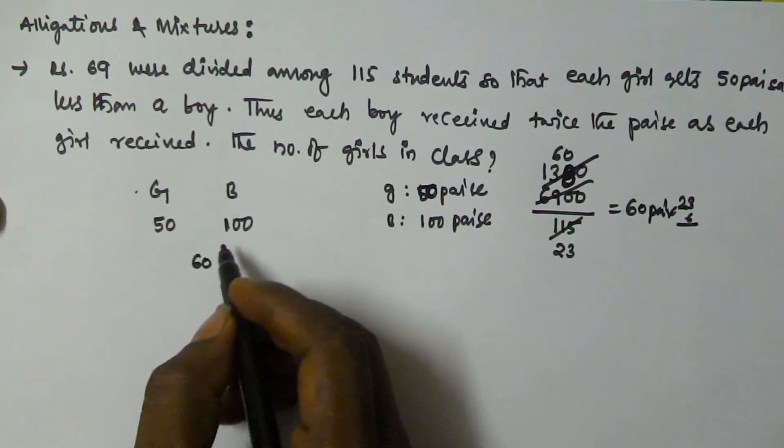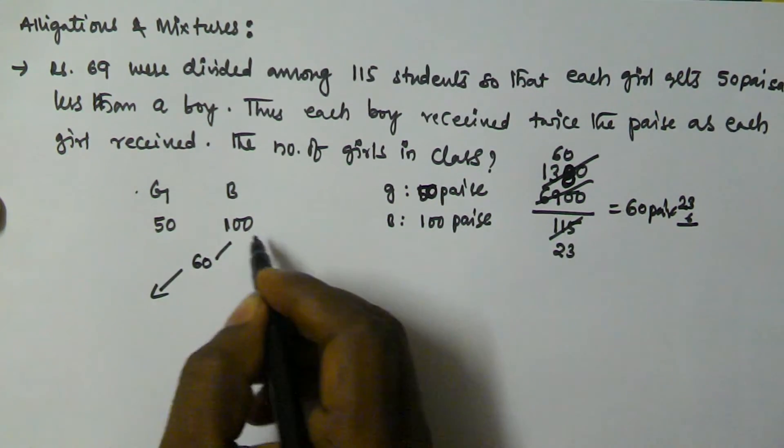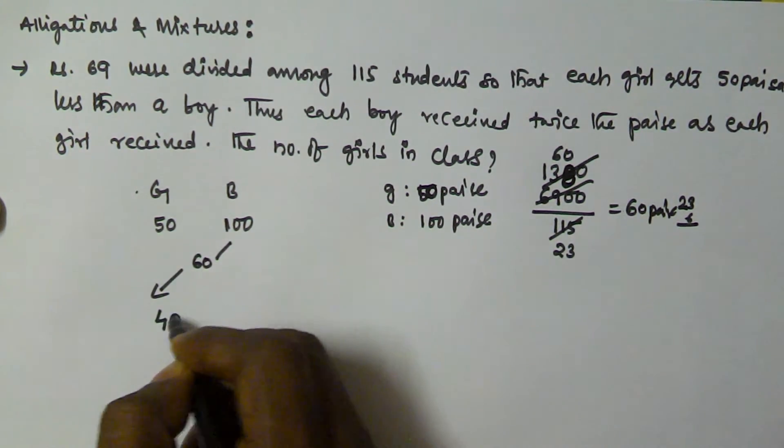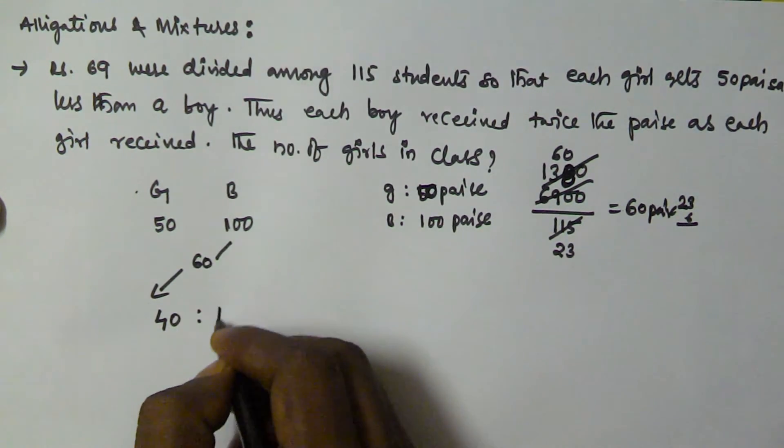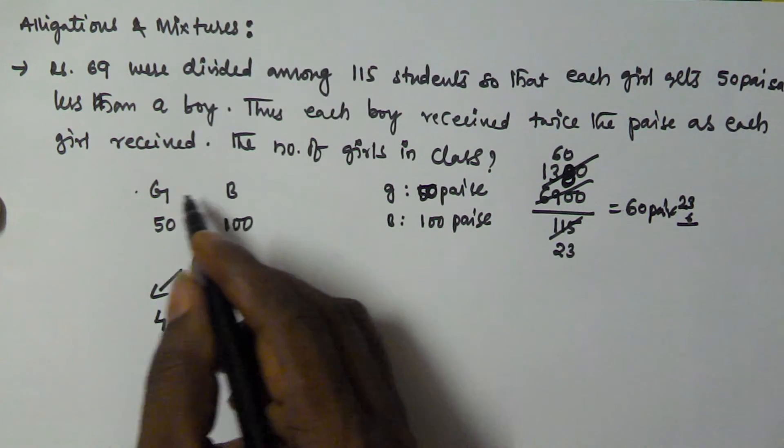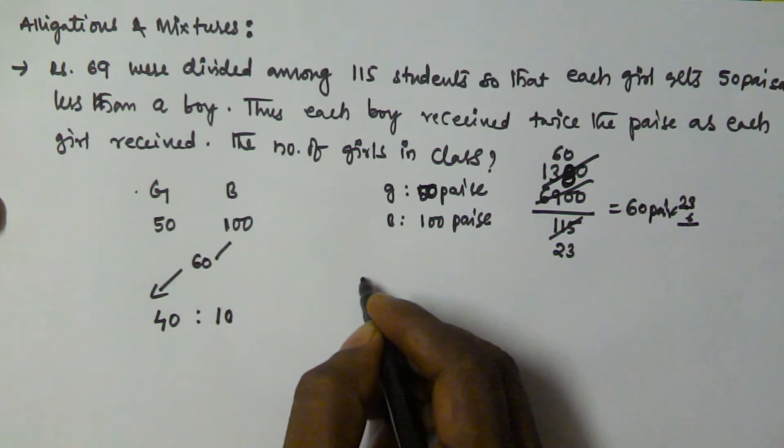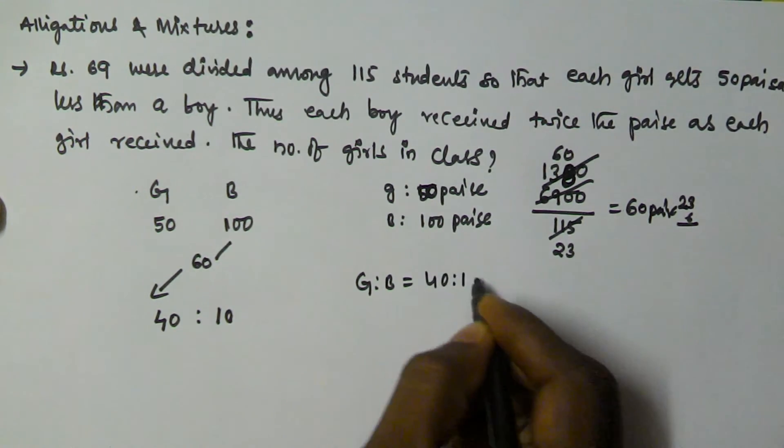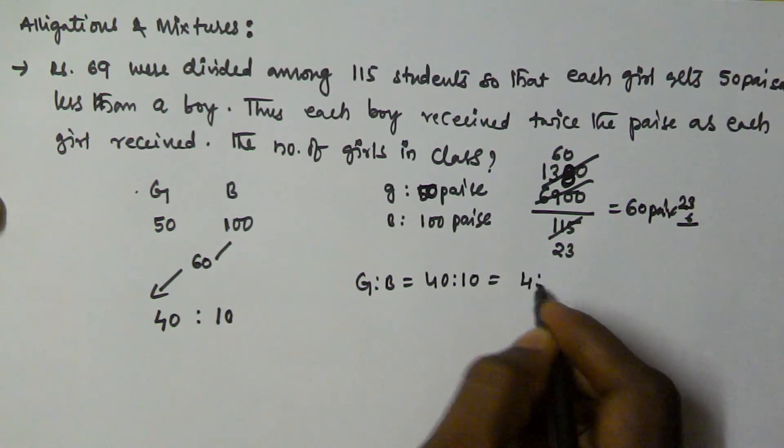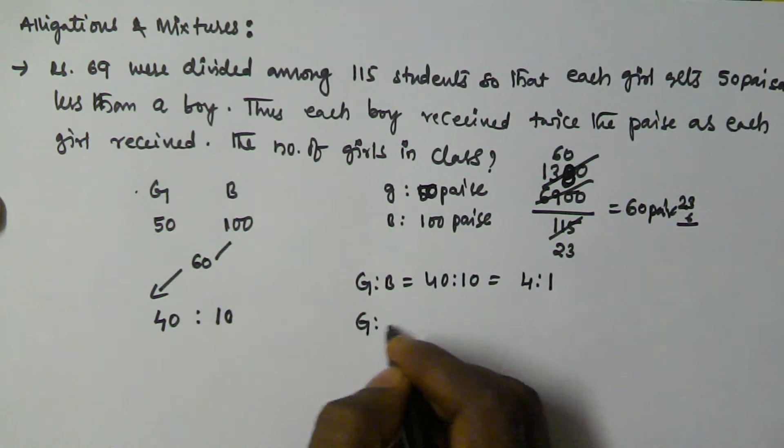So by using allegations and mixture, 100 minus 60 is 40, and 60 minus 50 is 10. So that means the ratio of the girls to the boys is 40 to 10, which is equivalent to 4 to 1.